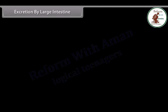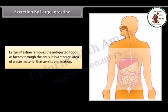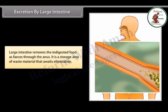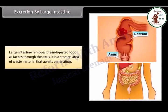Excretion by large intestine: the large intestine removes indigested food as feces through the anus. It is a storage area of waste material that awaits elimination.